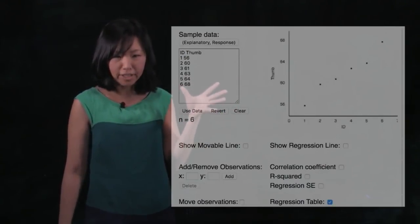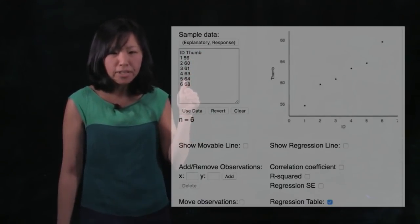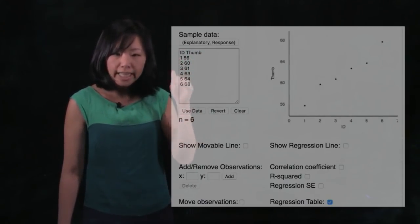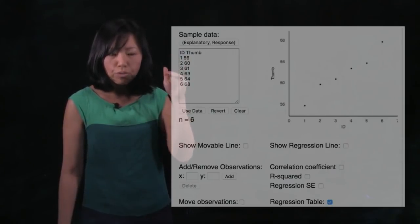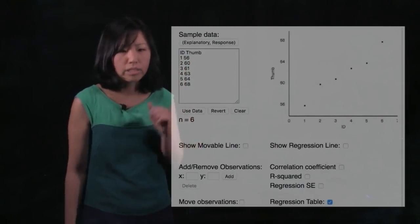Alright. So it always helps to get started with a pretty concrete set of data to talk about. So let's start with our tiny fingers. These are just six little thumb lengths right here in millimeters. And I've also put student ID. This is just student one, two, three, four. And you could see for student one, their thumb length is 56 millimeters. Here's for student two, it's 60, and so on and so forth.